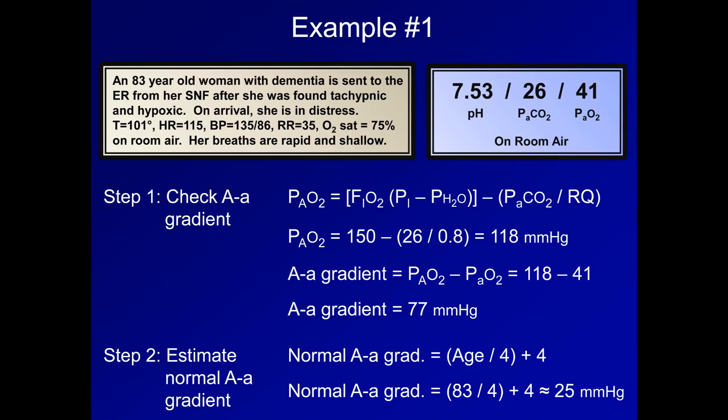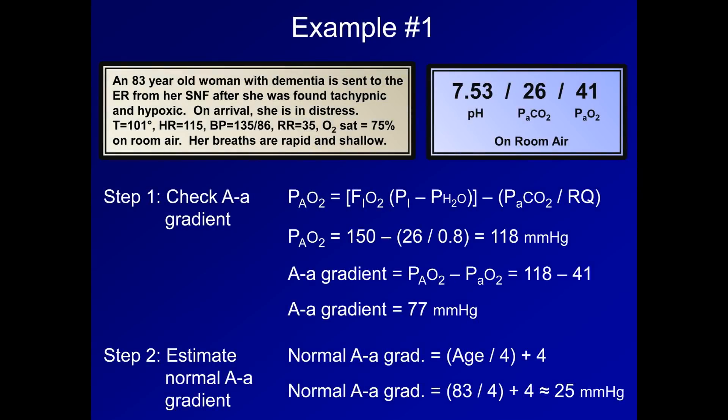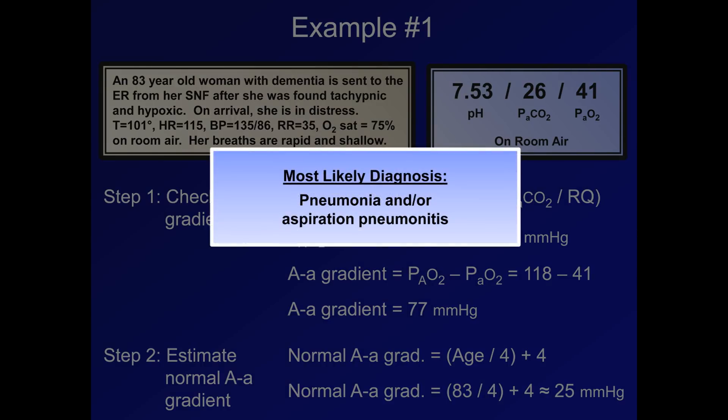As to the cause of the hypoxemia, her AA gradient is significantly increased over the expected gradient for her age. Therefore, the cause is not related to hypoventilation. With more experience, you may have seen that immediately from the ABG without needing calculations, as the low PaCO2 is not consistent with hypoventilation. In other words, a good clinical pearl is that if a patient has both a low PaCO2 and a low PaO2, you know that the AA gradient must be elevated. So what is her likely diagnosis? An elderly patient with dementia presenting with hypoxic respiratory failure has a long differential diagnosis. However, at the top of the list would certainly be pneumonia and or aspiration pneumonitis, though I would also consider acute lung injury or emerging ARDS secondary to sepsis from an as of yet unidentified source.